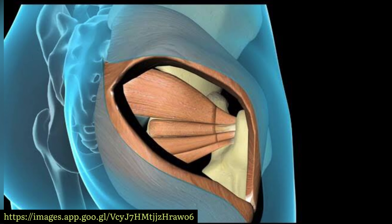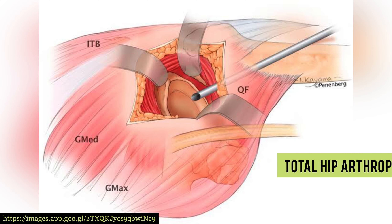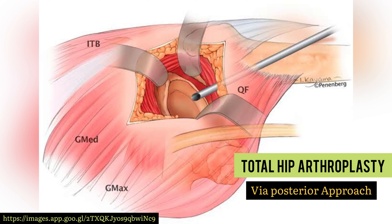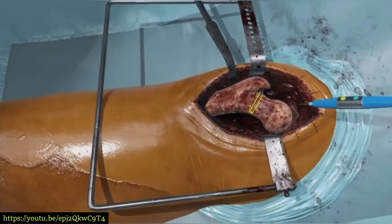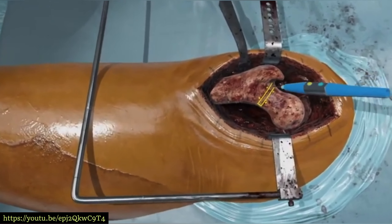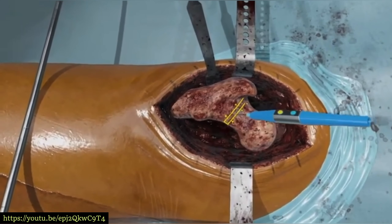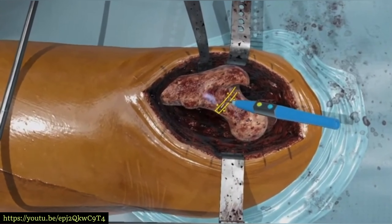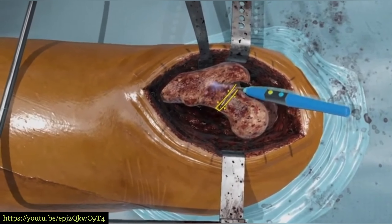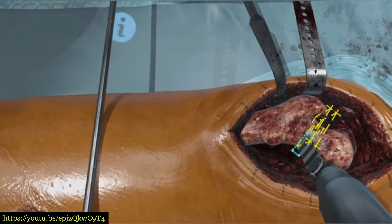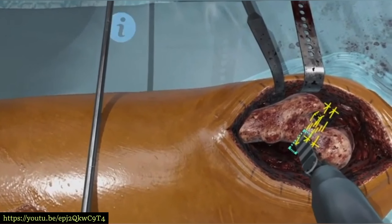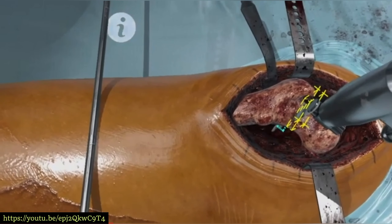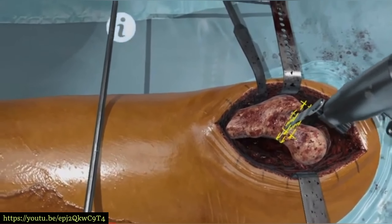Injury to this nerve is commonly caused by total hip arthroplasty via the posterior approach. It is the preferred approach to the hip for both primary and revision arthroplasty due to its visualization of the femoral shaft. However, there is no exact internervous plane and the inferior gluteal nerve is often not visualized.